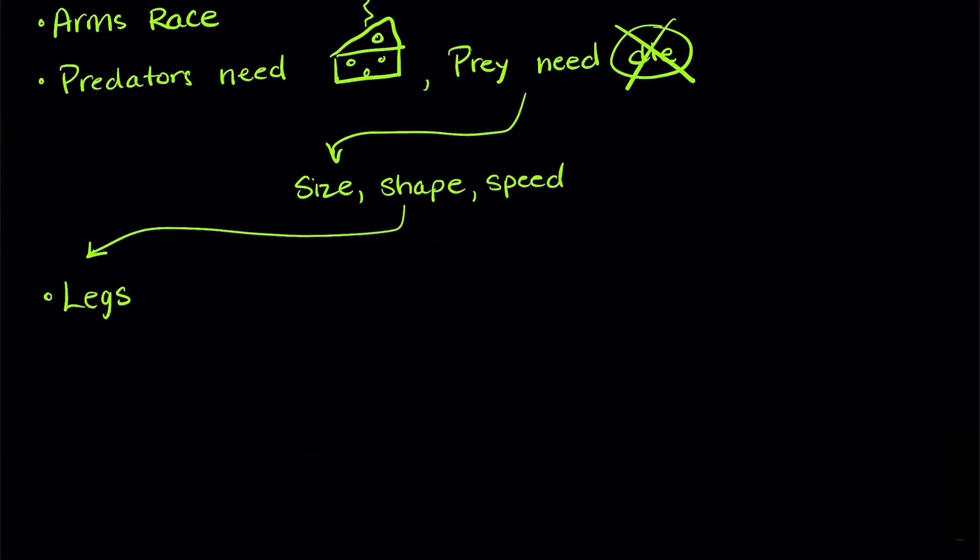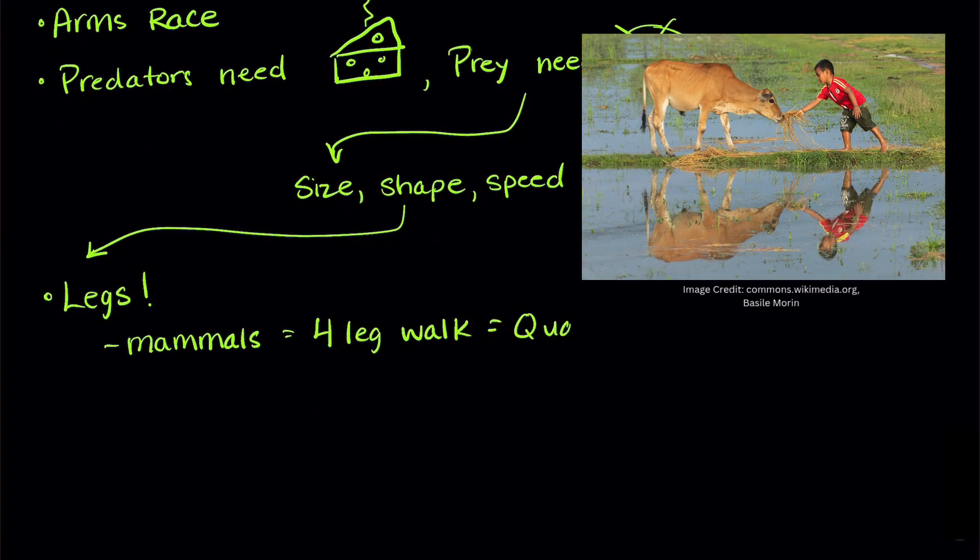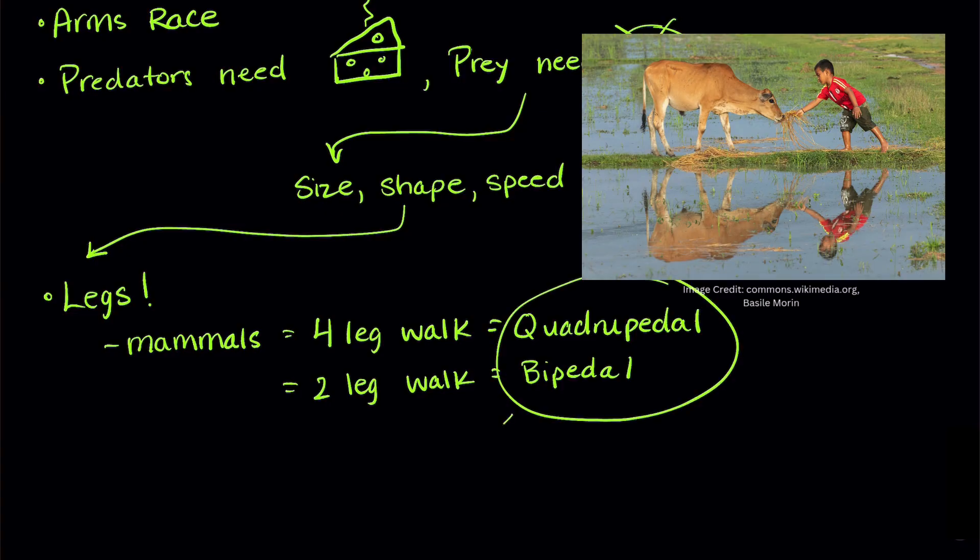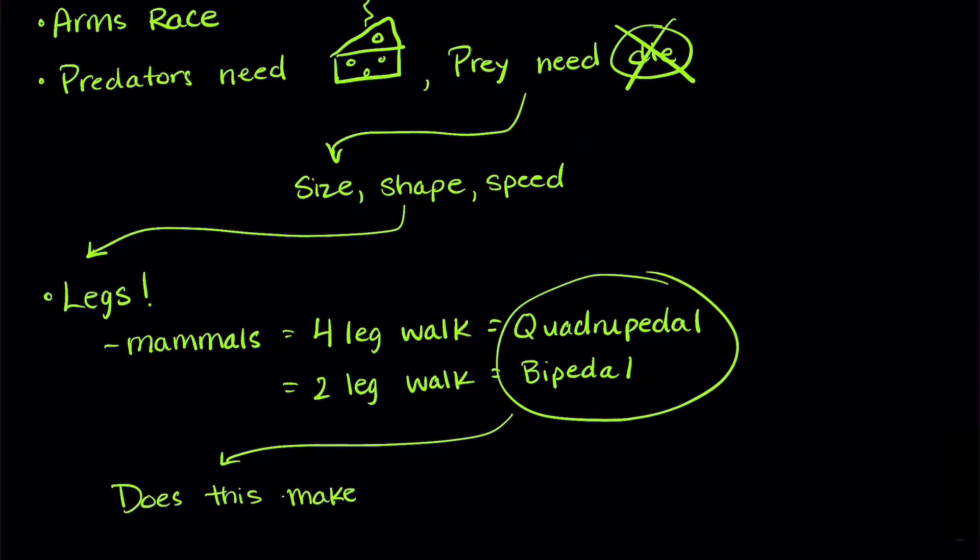But what about legs? Most mammals walk on forelegs. We call this quadrupedal. Think dogs, cats, cows, mice. But some mammals walk on two legs. We call this bipedal. Think humans. Bipedal animals usually have larger back legs. So researchers wanted to see if this makes a difference in prey being able to escape from predators.